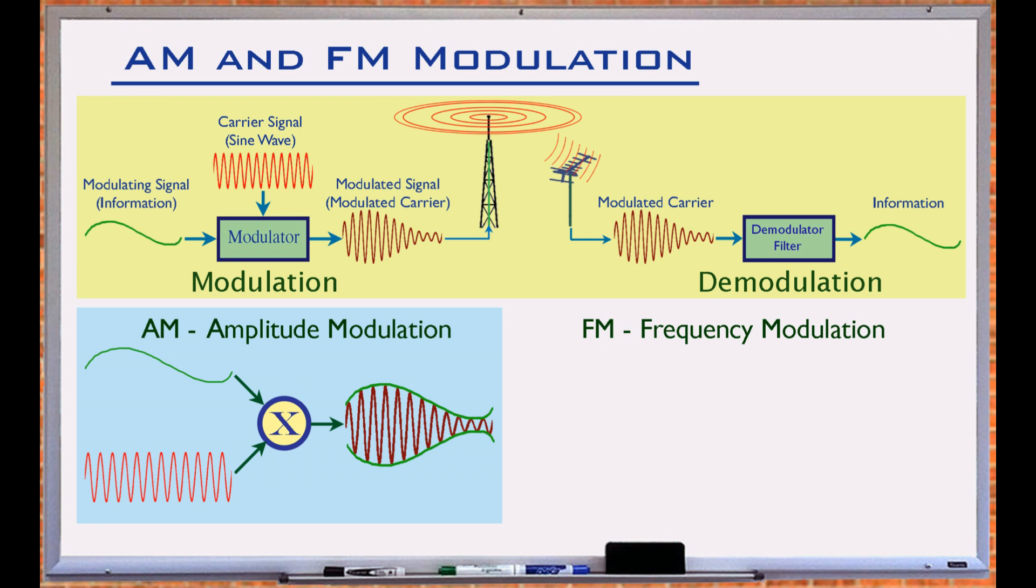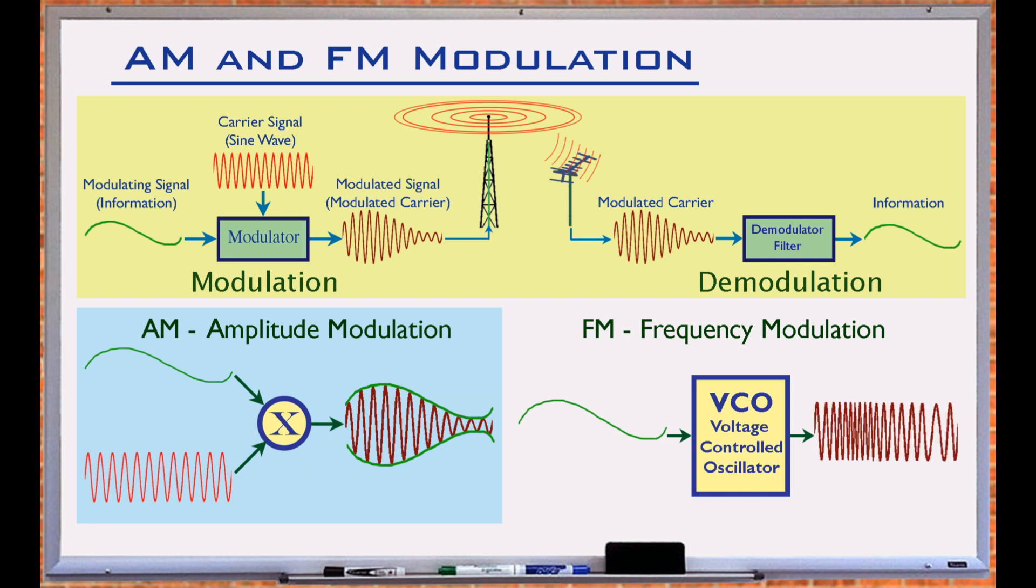FM or frequency modulation uses the amplitude of the message signal to vary the frequency of a carrier sine wave. The amount of frequency alteration depends on the deviation of the modulating signal from its midpoint. Bigger values increase, and smaller values decrease the frequency of the modulated signal.